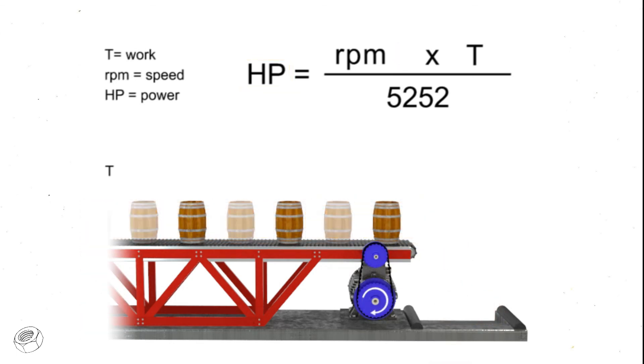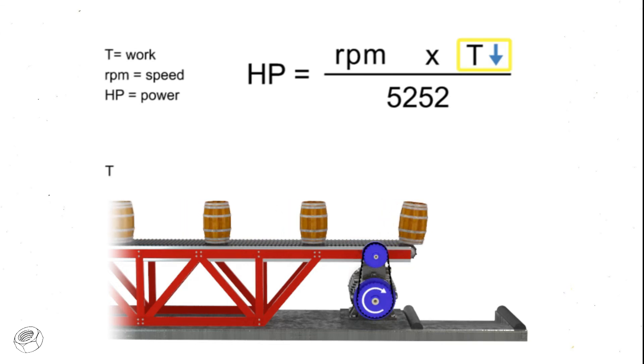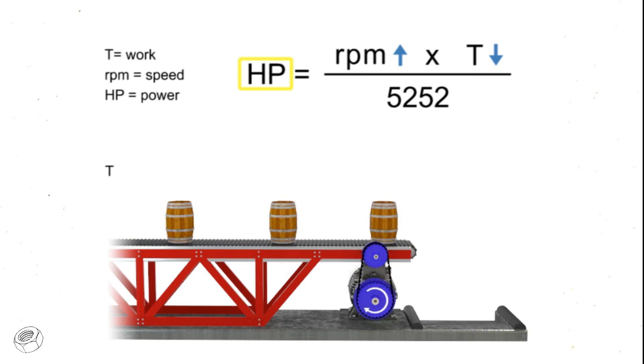If the torque decreases, the speed of the conveyor increases, and the horsepower generated by the motor remains constant.